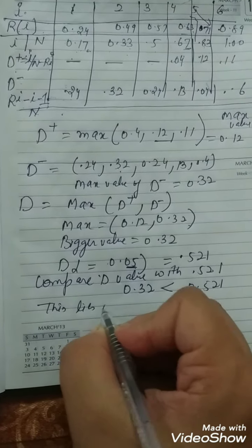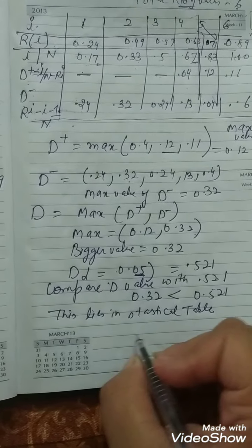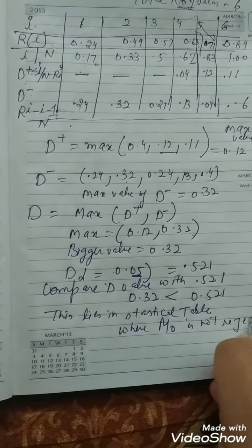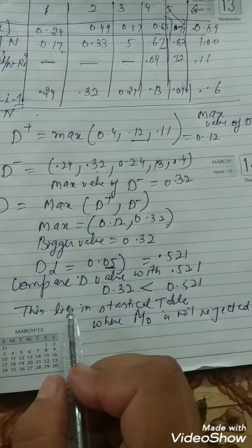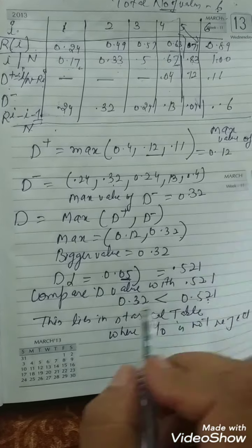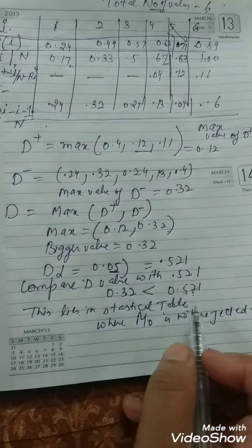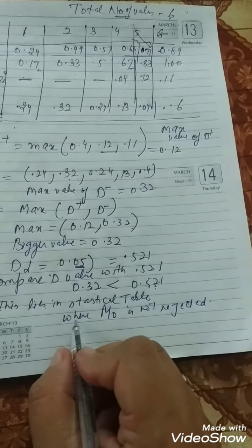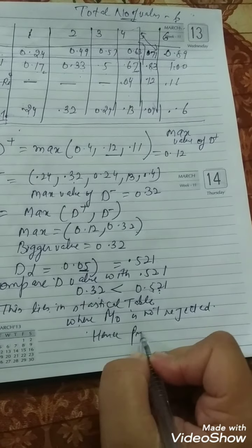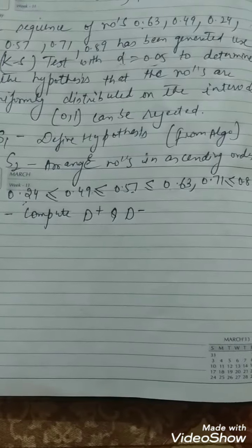Since D is less than D-alpha, H0 is not rejected. If the value of D were greater than or equal to the table value, then H0 would be rejected and the data would not lie in the statistical table region. But in this solution, H0 is not rejected, meaning the numbers are uniformly distributed. This concludes the KS test problem.